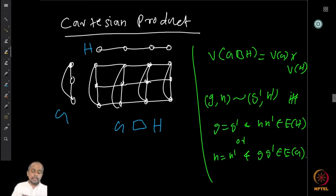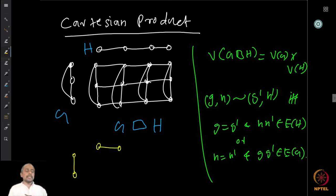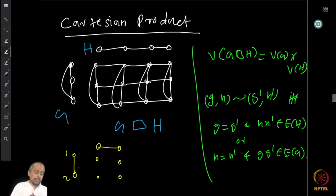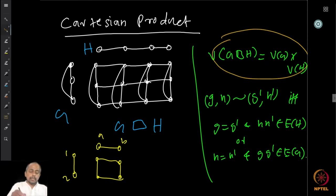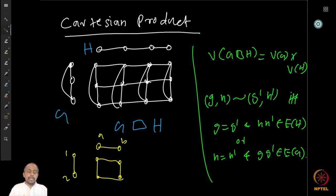If we look at this product where graph G is just one edge and graph H is also just one edge, in the product graph the points are 1a, 1b, 2a, 2b — and you get all four edges. This is why it looks like a box, and the symbol for the Cartesian product is a box symbol. The box tells you how to define the product.